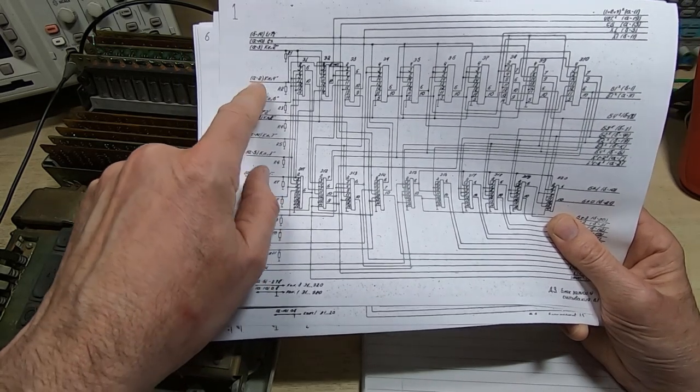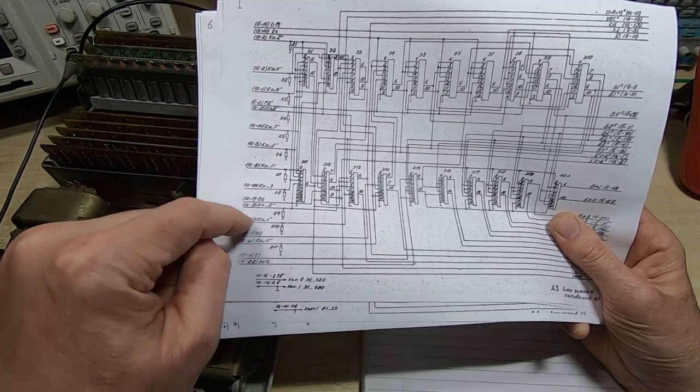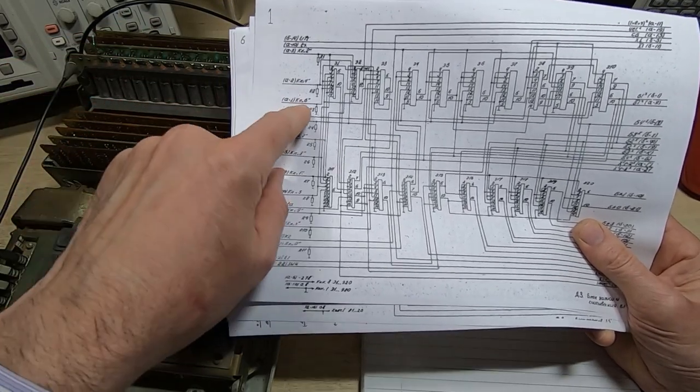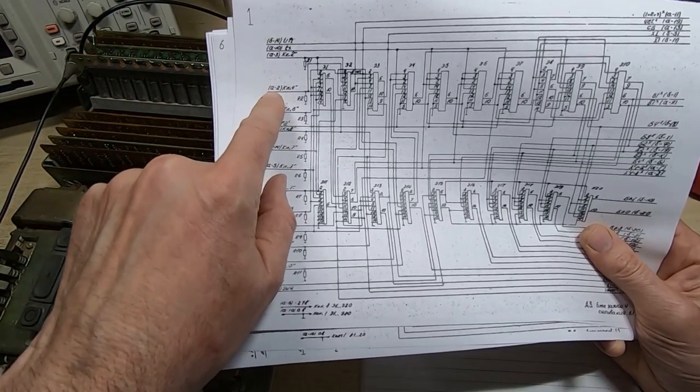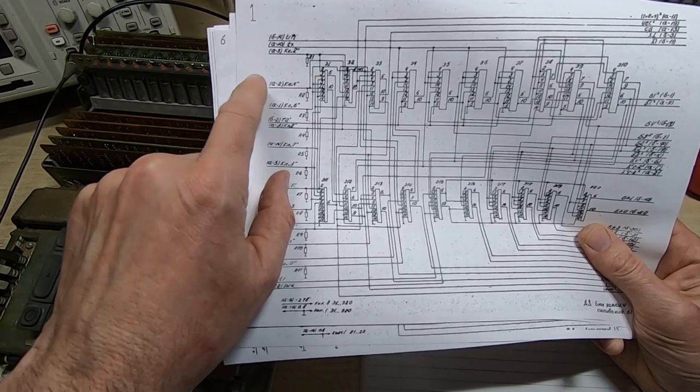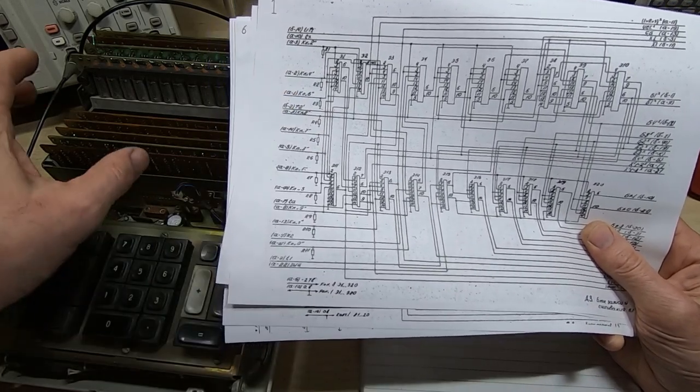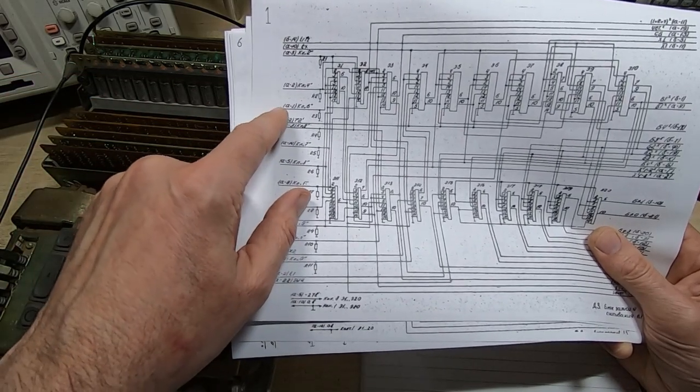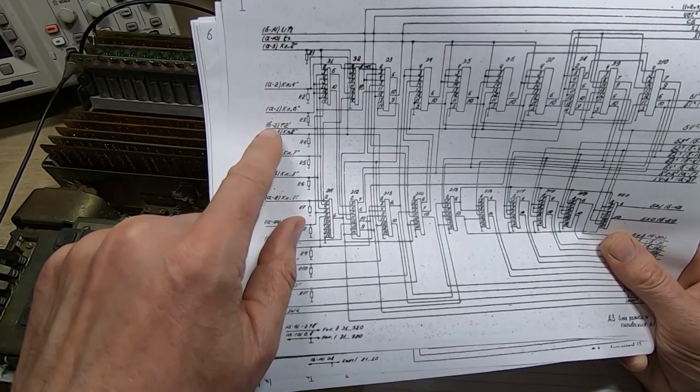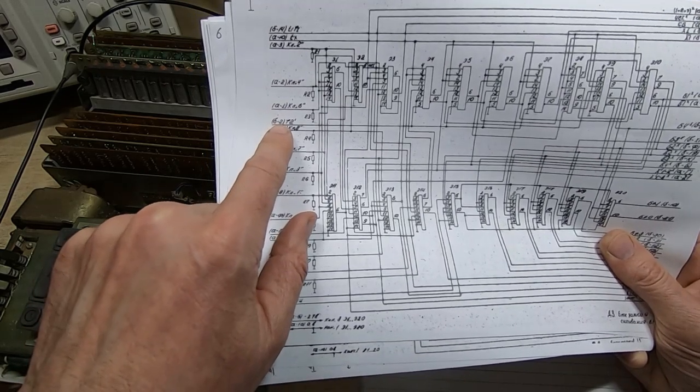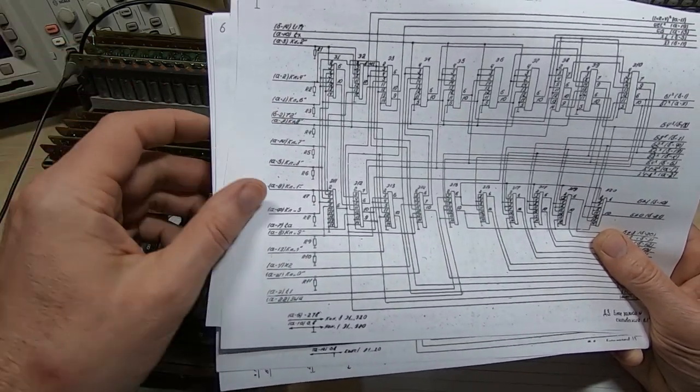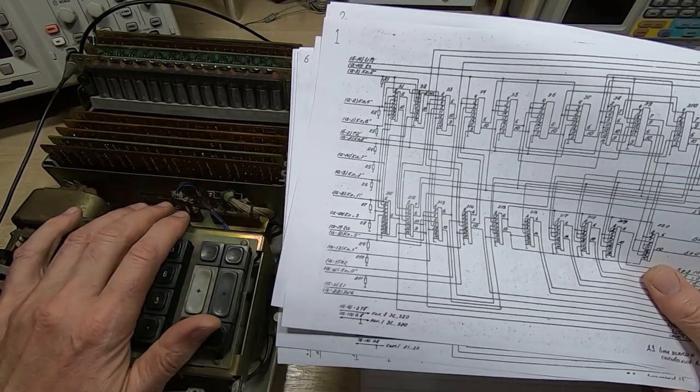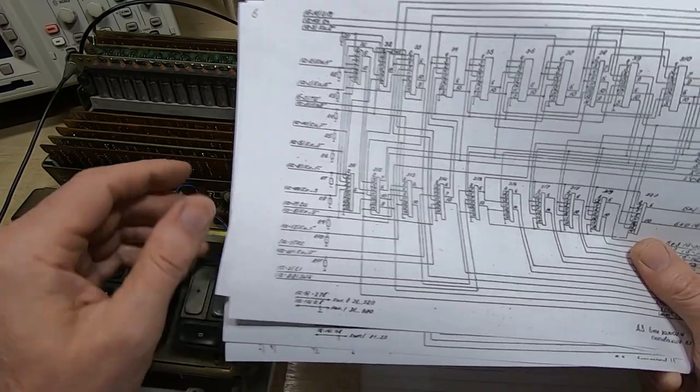These came out, they're obviously scans originally, it looked like this, quite hard to read, so I processed them and enhanced them a bit and printed them off so they are a bit more readable. But what we have is K A one through nine and zero, so these are inputs from the keyboard. I looked at the pins, these are pin designations.